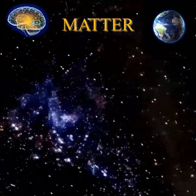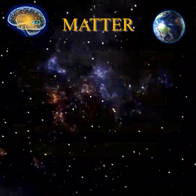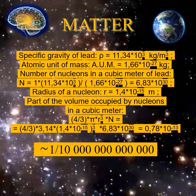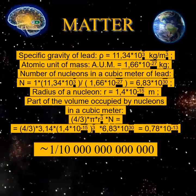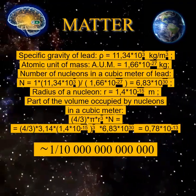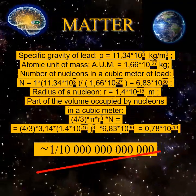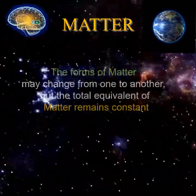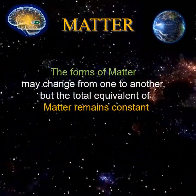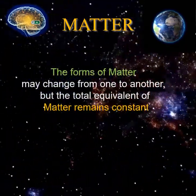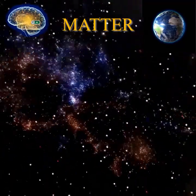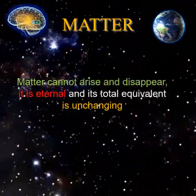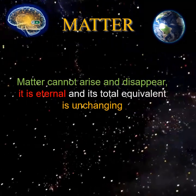For example, in a material such as lead, the particles of matter occupy a volume of less than 1 divided by 10 trillion, and the remaining volume is occupied by a form of matter which may be called pure matter. The forms of matter may change from one to another, but the total equivalent of matter remains constant. That is, matter cannot arise and disappear — it is eternal and its total equivalent is unchanging.